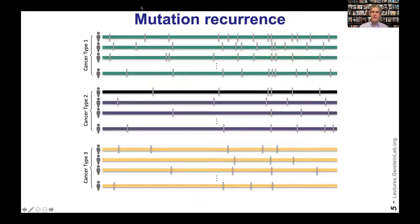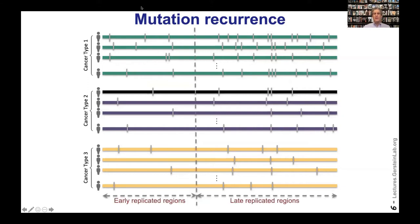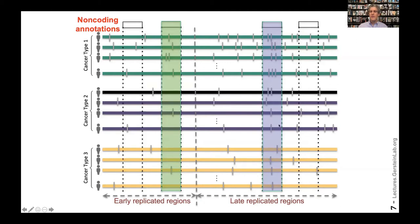First, background mutation rate estimation. One of the main ways we find drivers in cancers is through looking at mutational recurrence within a cohort. One of the problems is that this mutational recurrence can be confounded by genomic covariates such as replication timing. We have far more mutations in late replicating regions than early replicating regions, so we might falsely identify a region as a driver simply because it's late replicating.